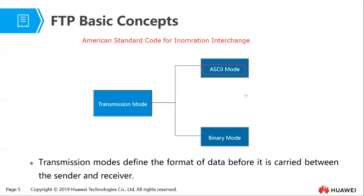The binary mode actually sends each file byte by byte, and this mode is used to send image files, program files, and similar files. Binary mode is what is used for transferring VRP image files and other program files between your network equipment.